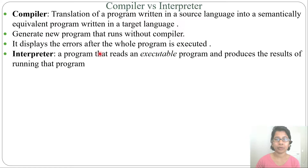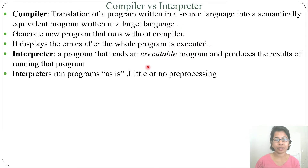Next is interpreter — a program that reads an executable program and produces the results of running that program. The interpreter will execute the program and give some output, but a compiler will not give output directly. A compiler will convert into another program, while an interpreter runs programs as-is with little or no processing.